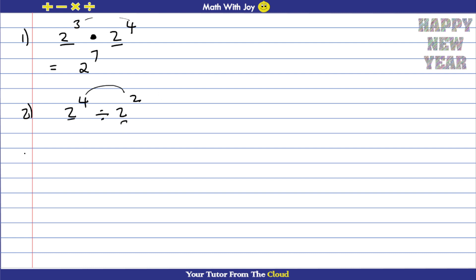So with same bases dividing, you subtract the exponents. My final answer is 2 to the power of 2, because 4 minus 2 equals 2. It's always the front exponent minus the back one — so 4 minus 2. That's another exponent law.